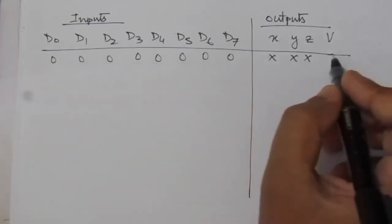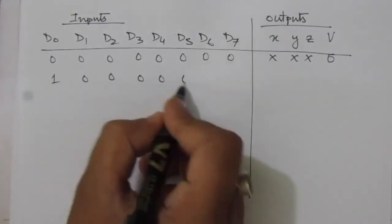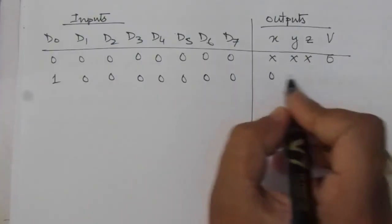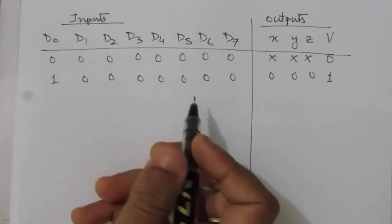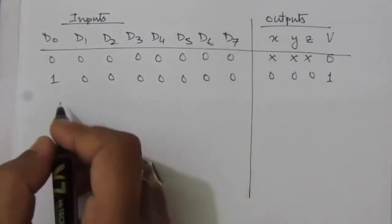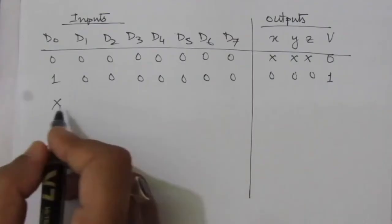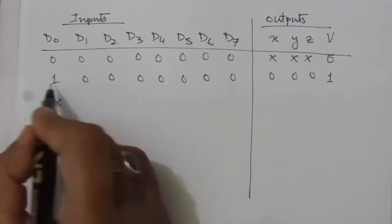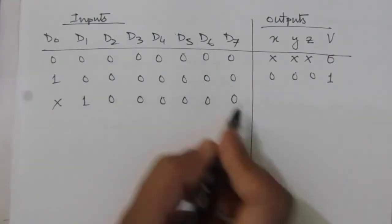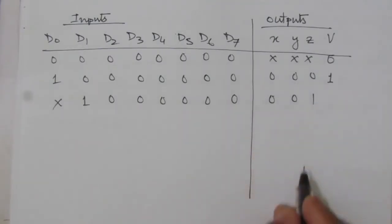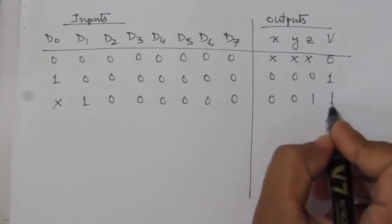Next, when d0 equals one and all others are zero, the output is zero zero zero and V equals one. We then keep increasing don't-care conditions and shift the one value by one bit. So the next entry has d1 equals one with don't-care entries before it, output zero zero one, V equals one. Then d2 equals one gives output zero one zero, V equals one.